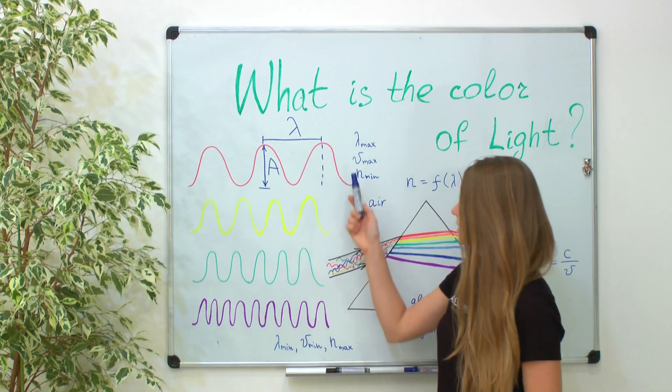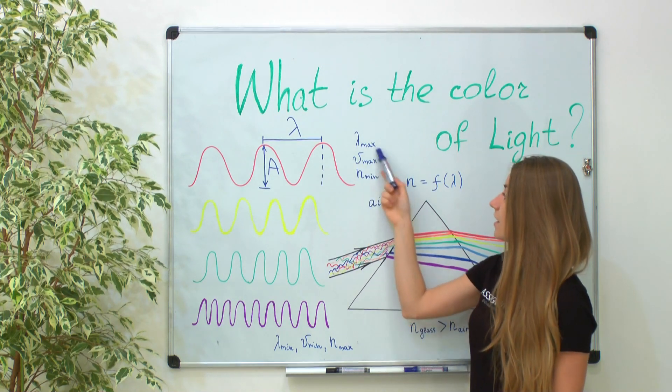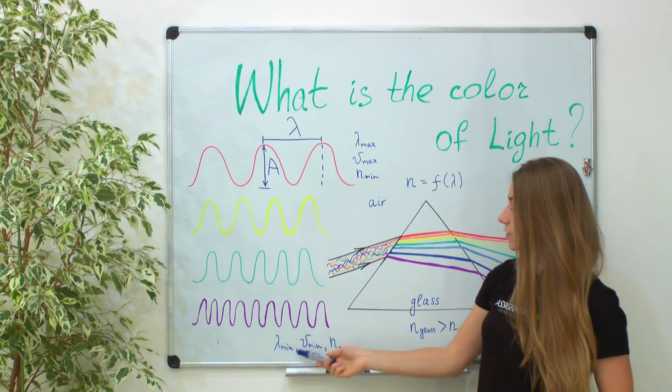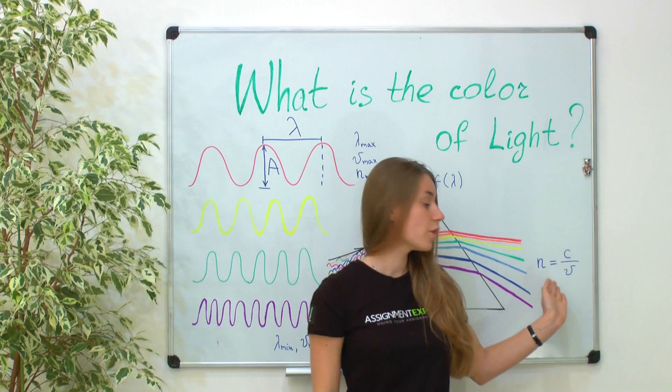For instance, you see that for red color the wavelength is the biggest, therefore it has the highest velocity in medium. On the contrary, violet color has the shortest wavelengths, and therefore the smallest velocity in medium.